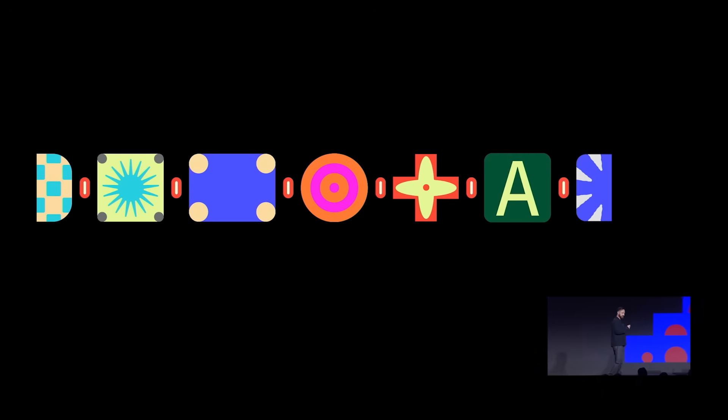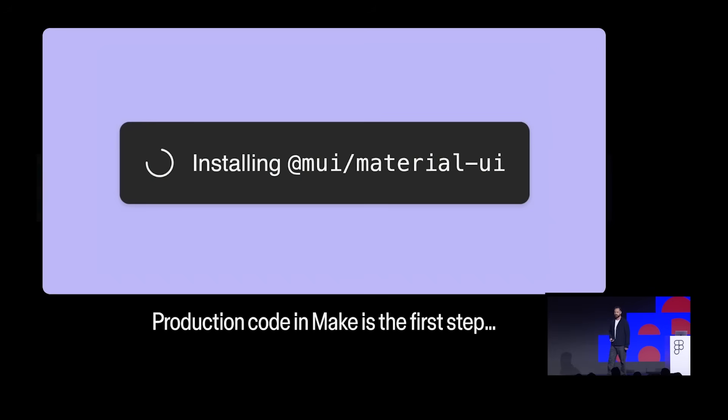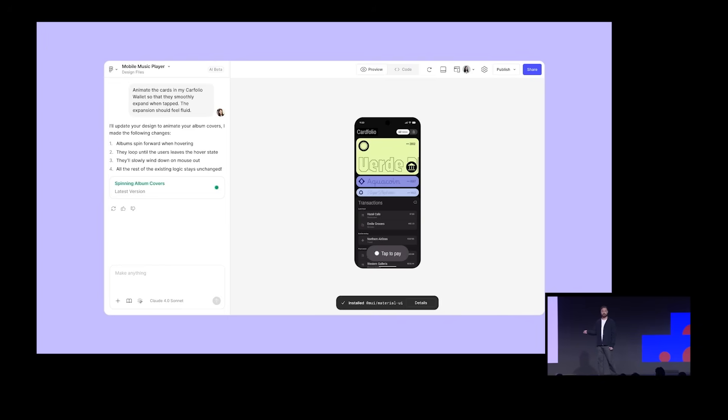Let's take a look at how some of our latest features start to close the chasm and start to build a more connected web of context. For years, your teams have been building design systems and putting their blood, sweat, and tears into high-quality, production-ready components. And now, for the first time, you can use those production-grade components in Figma Make.